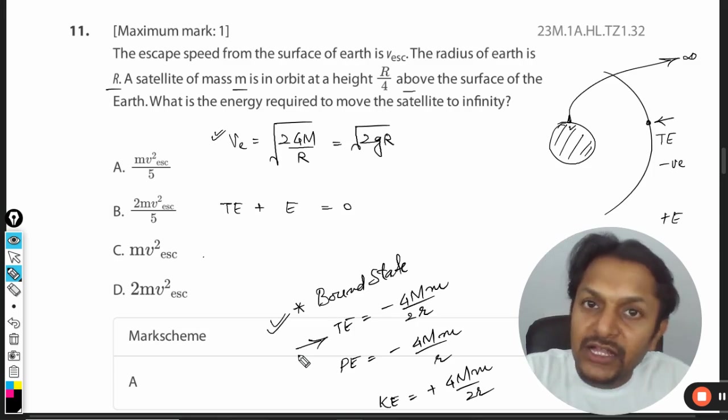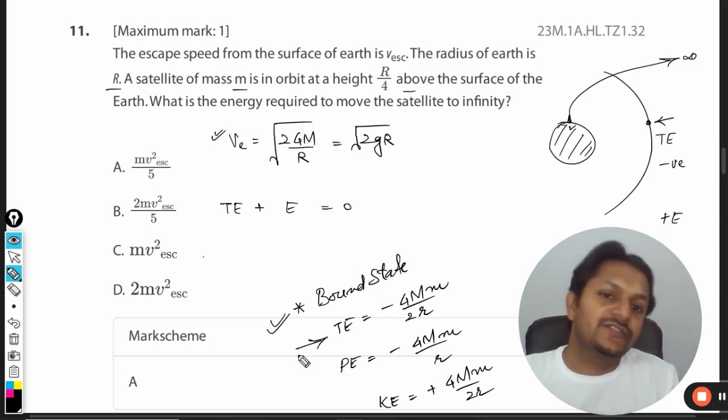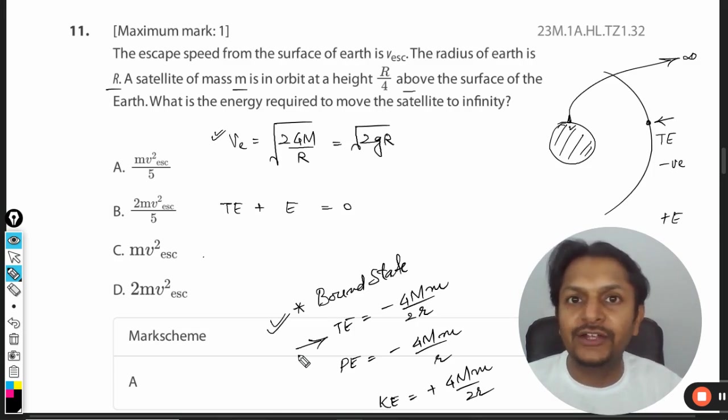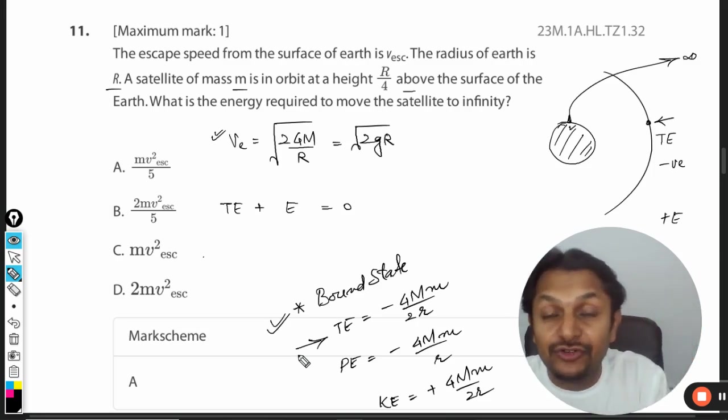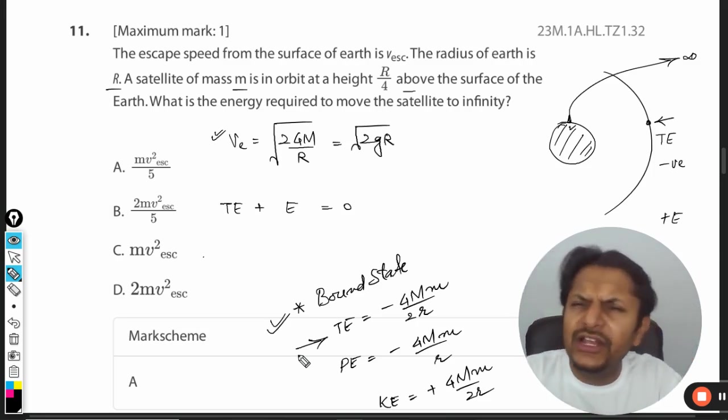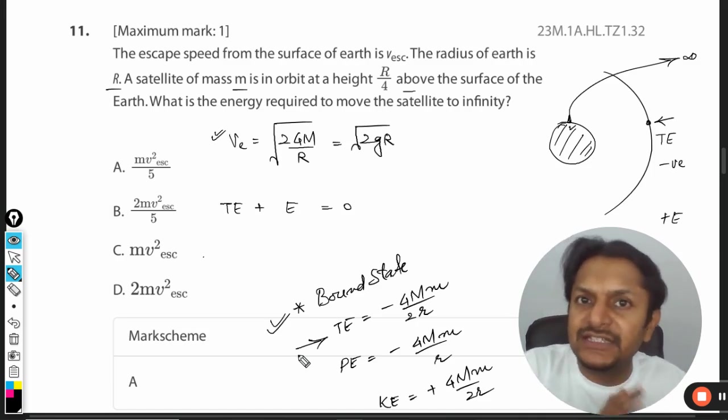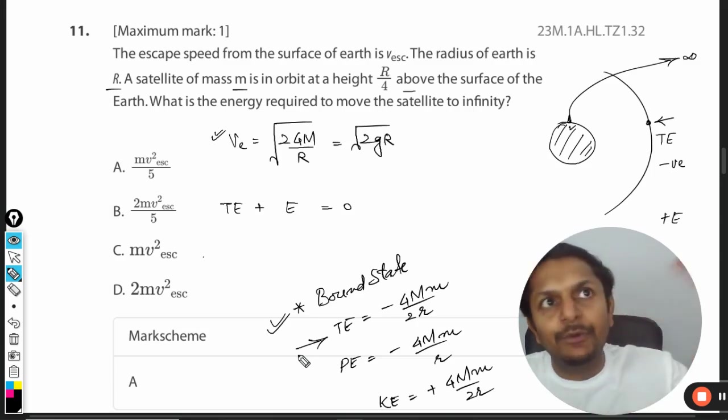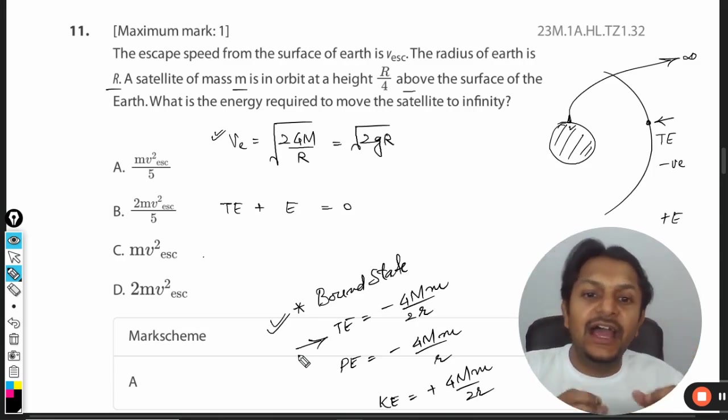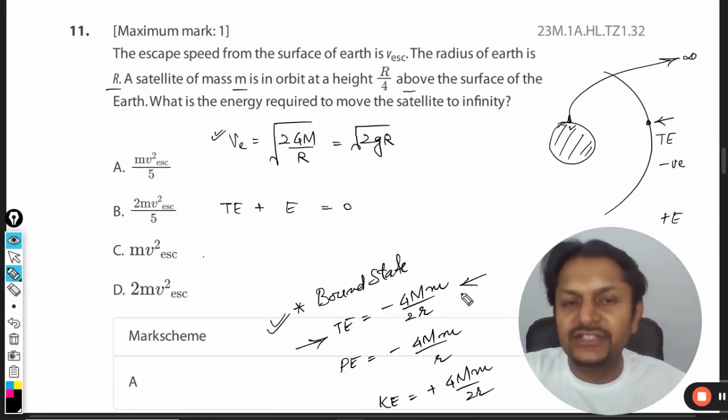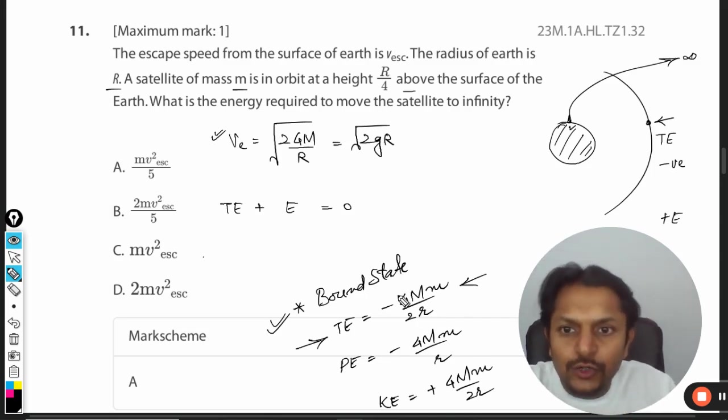Some students say this formula isn't in the data booklet, so they'll derive it in the exam. That's a bad idea. You might make mistakes while deriving—you'll find kinetic energy using centripetal force, and there will be too many steps. You can reach this conclusion if you don't remember it, but it's highly advised to remember this formula.